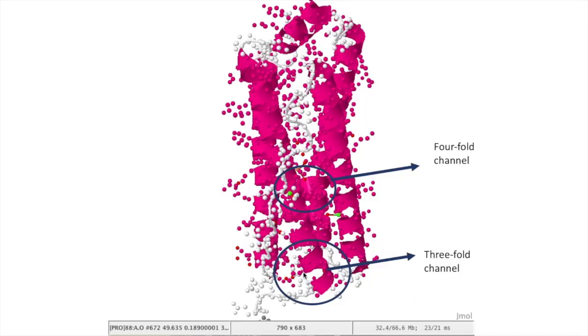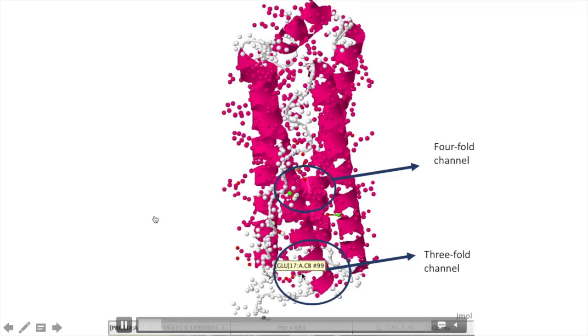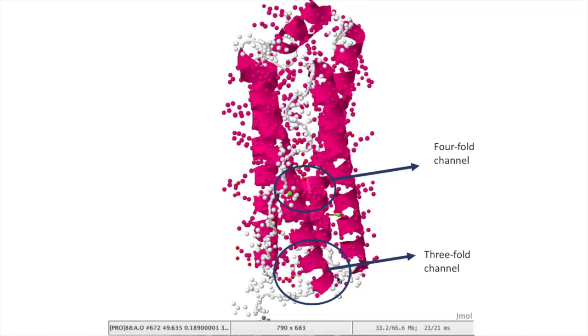Channels form at the intersection of three or four peptide subunits. There are two types of channels: three-fold channels and four-fold channels. Three-fold channels are polar because they are lined with aspartate and glutamate. Iron leaves ferritin through these channels.